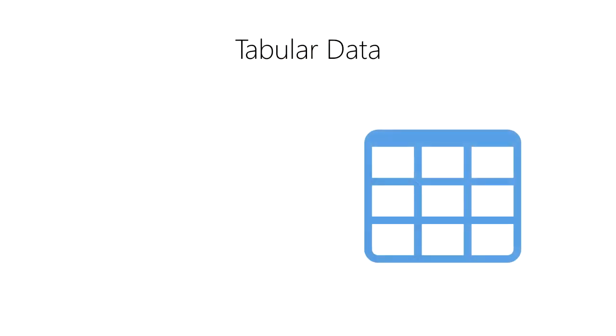Tabular data are the most common form of structured data we use for analysis in data science. But what are tabular data and how do we organize our data in this way? Tabular data are data organized into a table, and a table provides the data with structure.